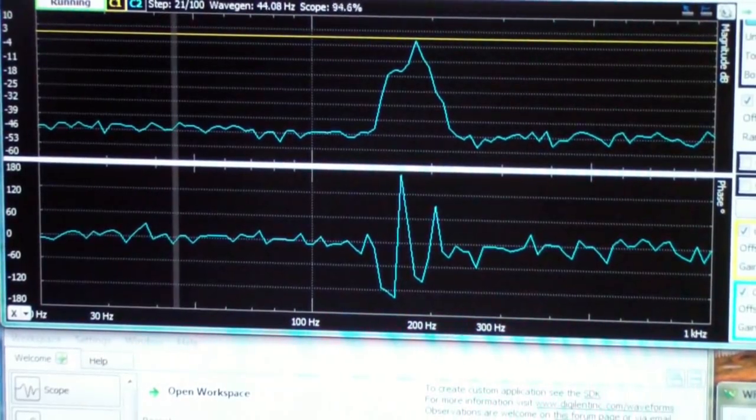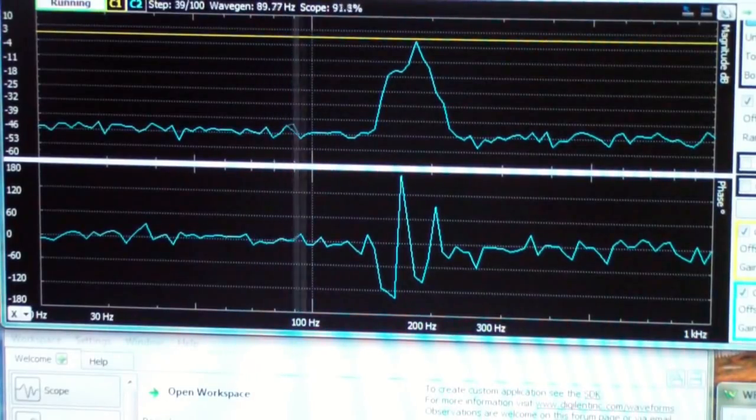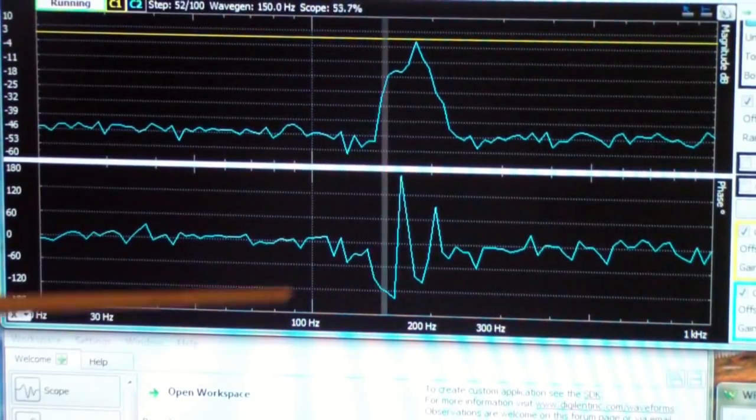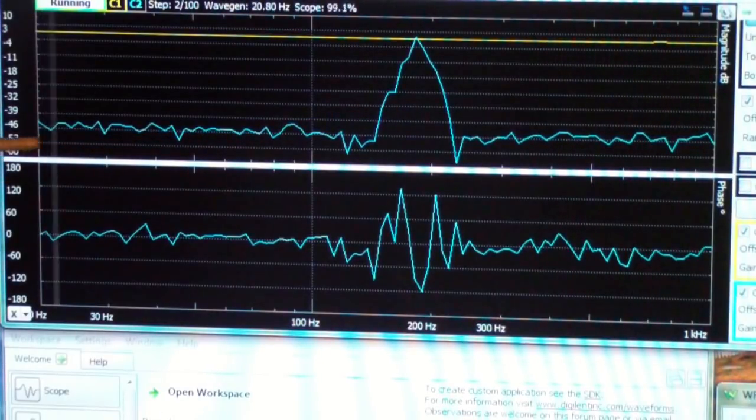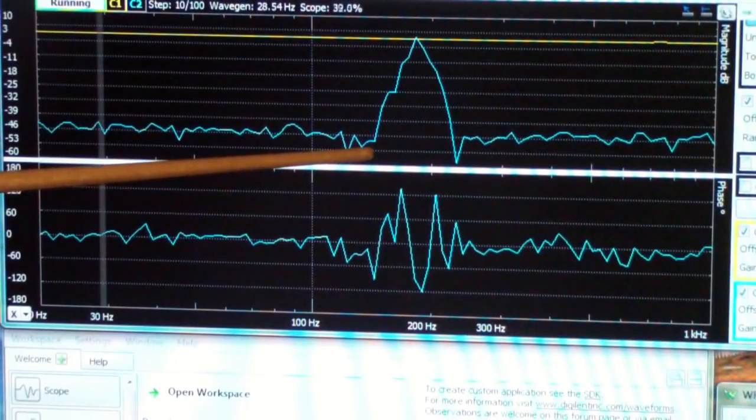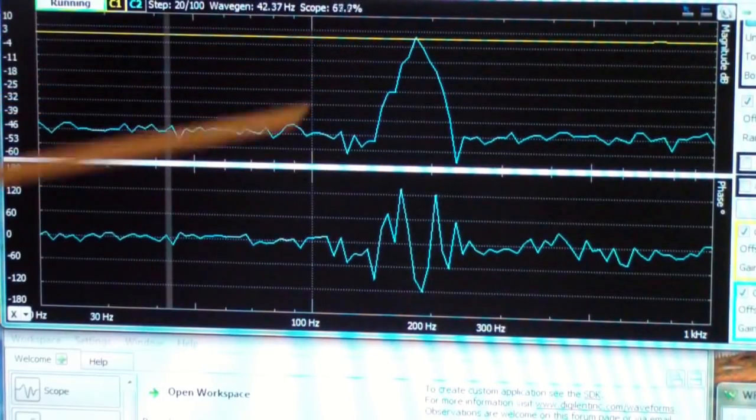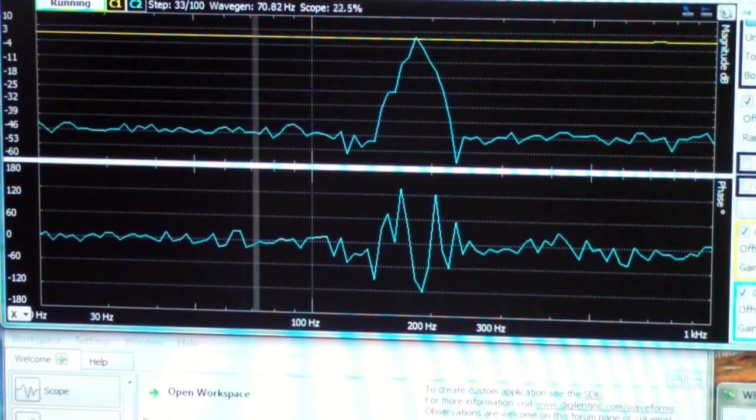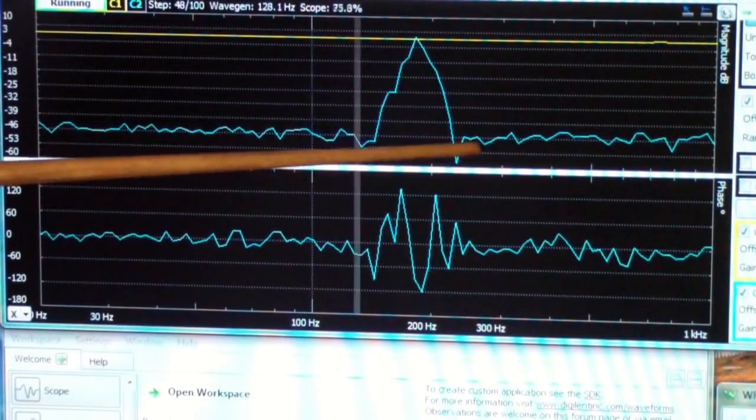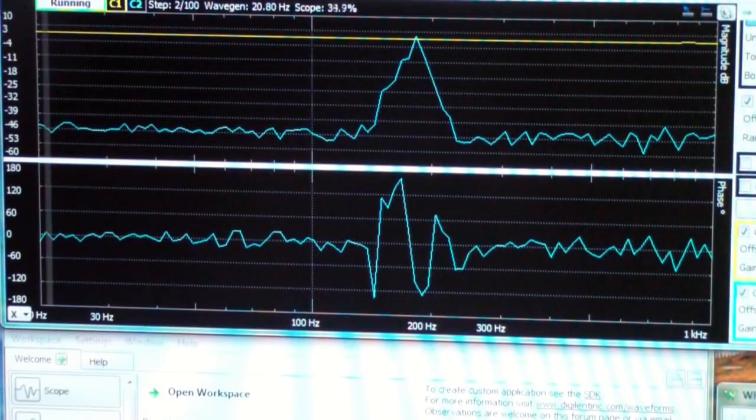And on the left is 20 hertz and on the right is 1 kilohertz. This is the passband. This line here is about minus 53 dB and this line is about plus 3 dB. So it's essentially about 60 dB from the baseline to the peak of the filter response.